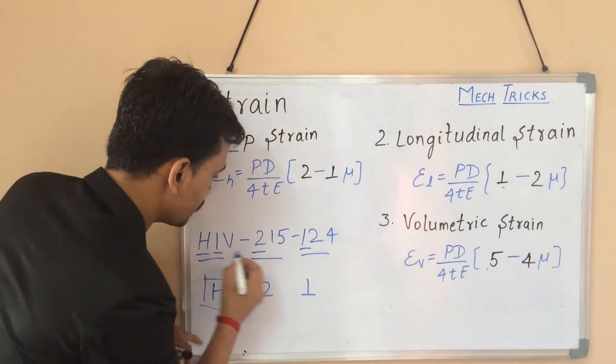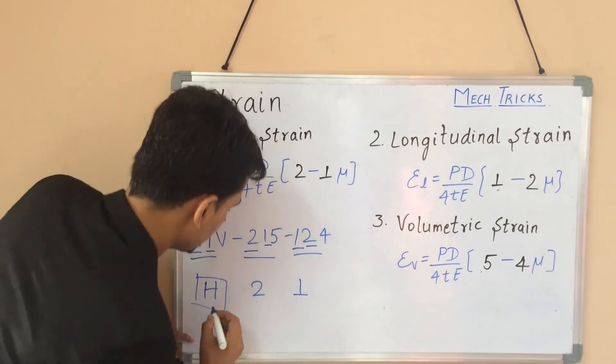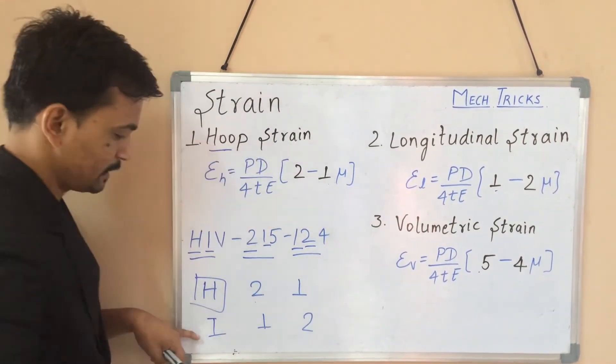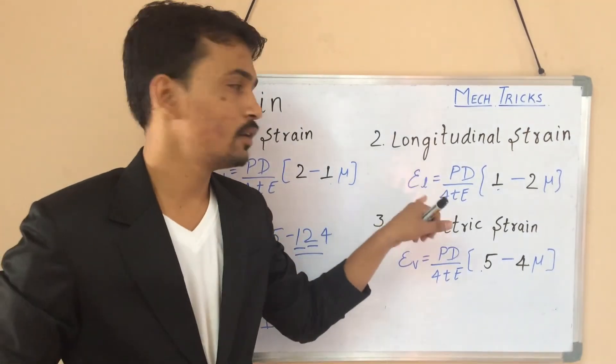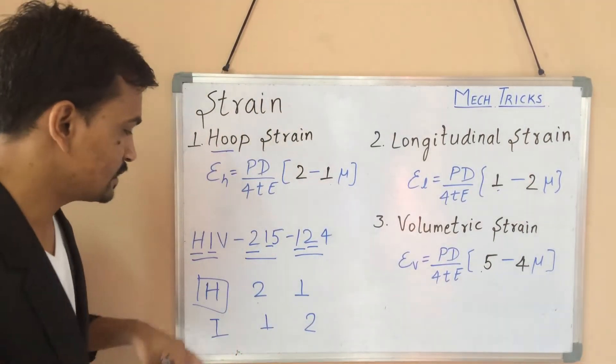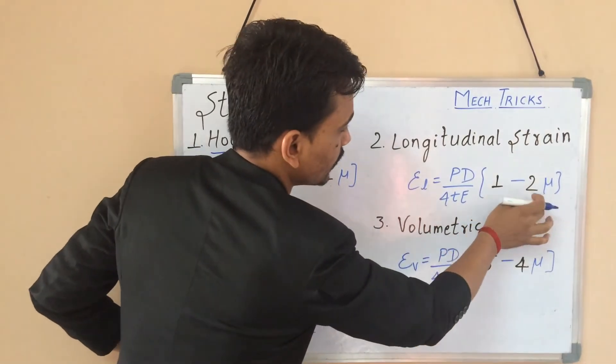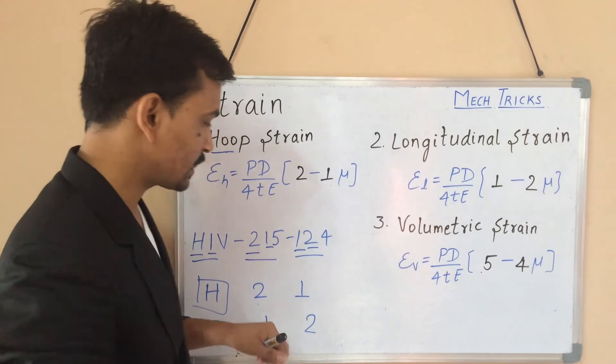Now let's go to the second alphabet from these things, that is I, 1, and 2. I am replacing I at the place of L for longitudinal strain just to make this trick easy. This one will be taken from here and this two is taken from here. It will come over here.